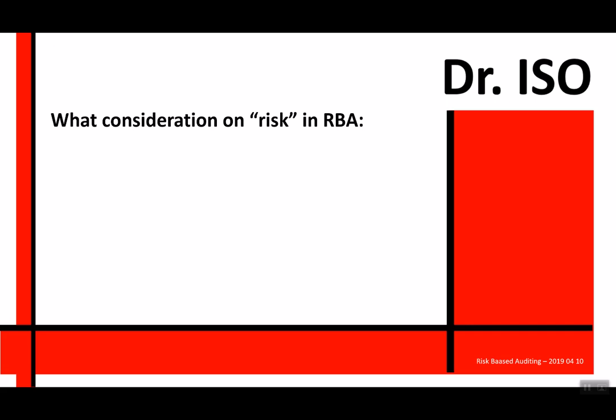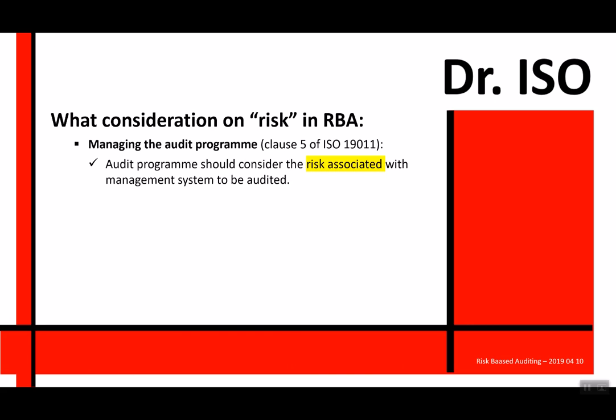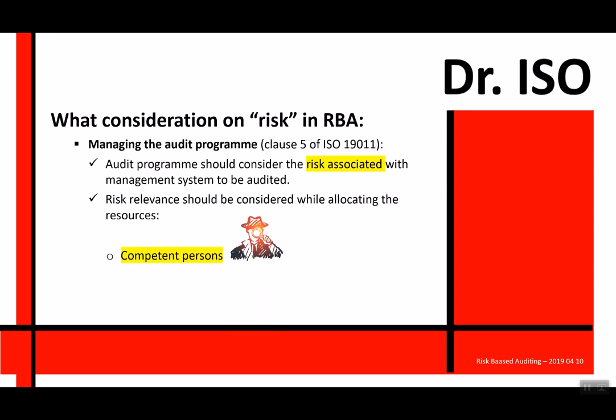What considerations on risk apply in a risk-based audit? Looking at Clause 5 of ISO 19011, which covers managing the audit process, it states the audit program should consider the risk associated with the management system to be audited — what are the risks in this management system to the organization — then establish the program. When planning resources, you need to consider competent persons and competent methods to perform a risk-based audit program.